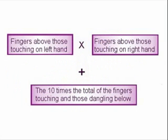The three steps to using your fingers as a calculator for the 6, 7, 8, and 9 times tables are illustrated here. Remember, the fingers above those touching on the left hand times the fingers above those touching on the right hand are added together to the two fingers touching and any dangling below, counting them as tens.